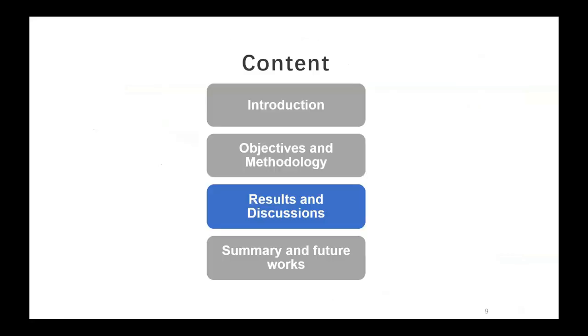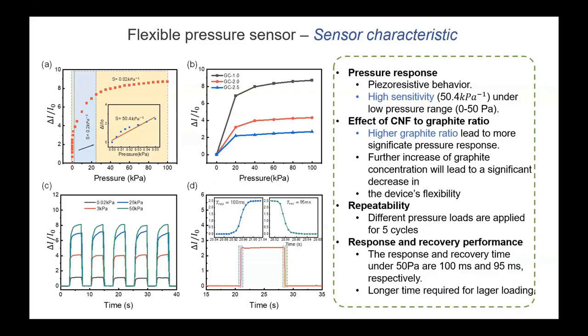Next I will move on to the preliminary results of this work. We first characterized the transient response of the sensor. The as-prepared GC films were cut into pieces of 6 times 10 millimeters and attached to gold electrodes for further testing. Figure A shows the piezoresistive behavior and the sensitivity of our pressure sensor under loading ranging from 0.05 to 100 kPa. When there are gaps between the graphites with no pressure loading, the pressure sensor exhibits relatively low conductivity under the release state. When the thin film is subject to external pressure, the contact resistance among the graphite flakes changes under pressure and release states.